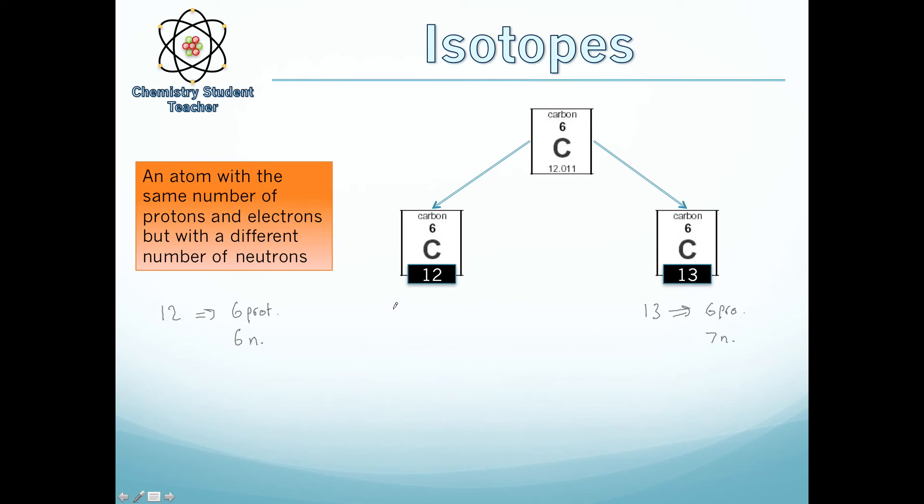Carbon 12, in nature, all carbon will be 98.90% carbon 12, whereas carbon 13 will have a 1.10% abundance in the universe, or as far as we can analyze anyway. So when we take the average of this, we get an average of 12.011.